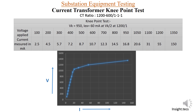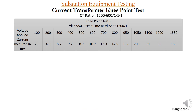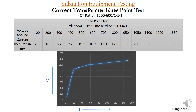The graph of results is similar to the knee point voltage graph seen earlier. Up to 950 volts, the current increase is steady and slow, but after 950 volts — beyond the knee point — the current increases very rapidly. This is the CT saturation region, which may damage the core. That is how the knee point voltage test is performed.